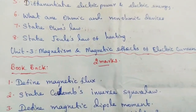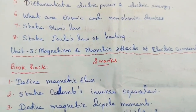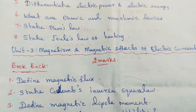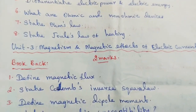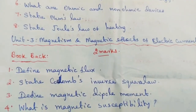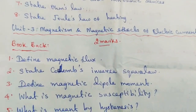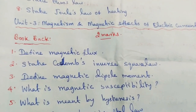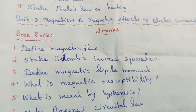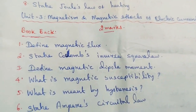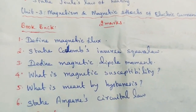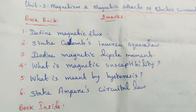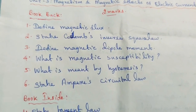Unit 3: Magnetism and Magnetic Effects of Electric Current. Book back questions: Define magnetic flux. State Coulomb's inverse square law. Define magnetic dipole moment. What is magnetic susceptibility? What is meant by hysteresis? State Ampere's circuit law.